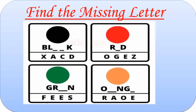Here are the names of some colors. First one is Black. Missing letters are A and C. B-L-A-C-K. Black. Second one is Red. Here missing letter is E. R-E-D. Red. Third one is Green. So the missing letters are E and E — double E. G-R-E-E-N. Green. The fourth color is Orange. Missing letters are R, A and E. O-R-A-N-G-E. Orange.